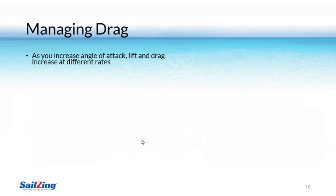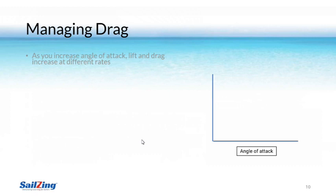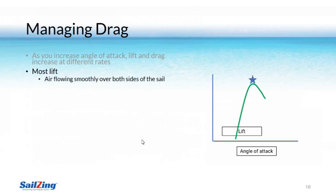For now, let's focus on the effects of increasing the angle of attack. Let's look at some simplified graphs to show that lift and drag increase at different rates when you sheet in the sail or bear off. This is key to getting the most out of your sail. The bottom axis shows the angle of attack which gets bigger as you move to the right — think of this as sheeting in your sail or bearing off more and more. As you sheet in your sail or bear off, the lift increases up to a point and then starts decreasing when the sail begins to stall. You get the most lift right before the stall point, when the air is flowing smoothly over both sides of the sail.